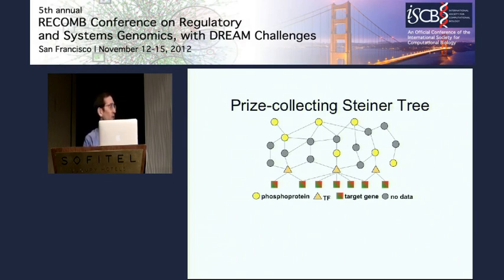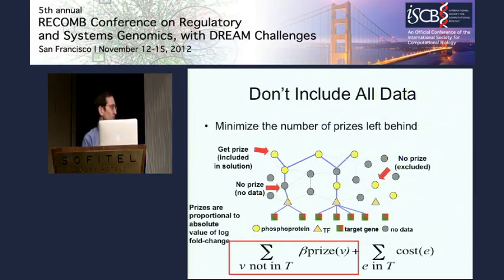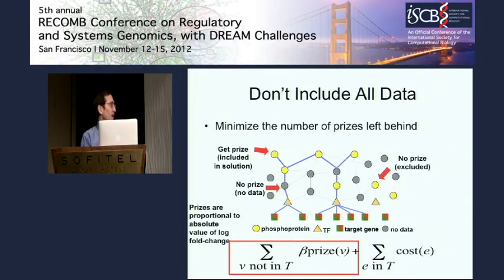The core idea of the prize-collecting Steiner tree: in a little piece of this hairball, I've shown in yellow the proteins changing in phosphorylation, boxes indicate genes changing in expression, and triangles are transcription factors. I want the algorithm to find some piece of this that includes a lot of data easy to connect with high-confidence interactions, but decides not to include some points because they're hard to connect with high-confidence interactions. The algorithm assigns prizes to every node based on our confidence it really was changing in the experiments — if a protein is strongly changing in the phosphoproteomic data, it gets a big prize; if it's marginal, a small prize; proteins for which we have no experimental data get no prize. The algorithm keeps the prize every time it includes that node in the network, and gets no prize for nodes it leaves out.